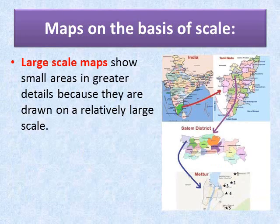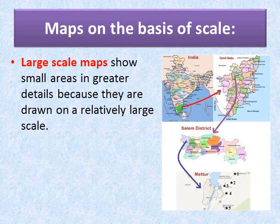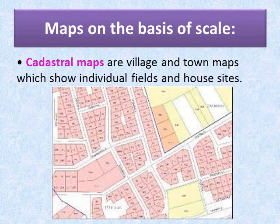Let us learn about maps on the basis of scale. Large scale maps show small areas in greater detail because they are drawn on a relatively large scale. For example, the picture shows the Matur area given in a map of India, then Tamil Nadu, then Salem, and then Matur in detail. This is an example of a large scale map. Cadastral maps are village and town maps which show individual fields and house sites.